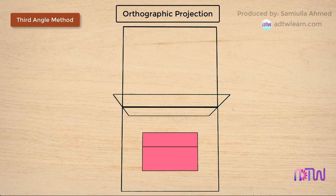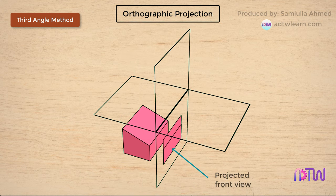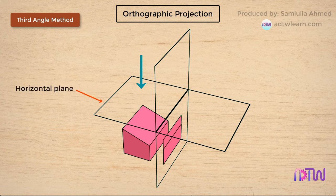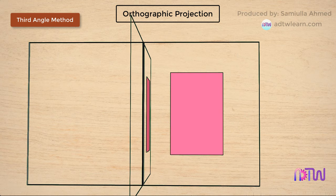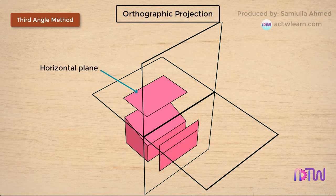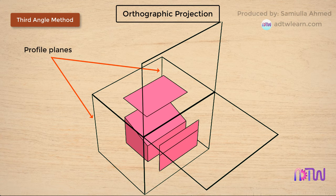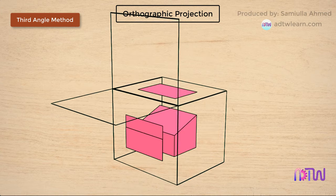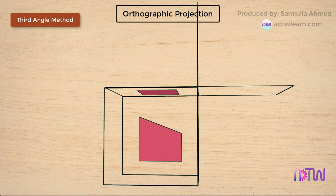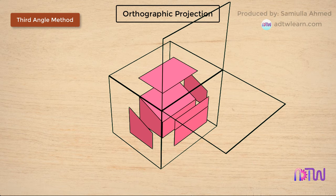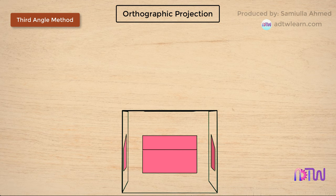Similarly, while viewing from the top, the horizontal plane comes between the point of view and the object, so the top view is projected on the horizontal plane. For the right-hand side and left-hand side views, we have two profile planes on either side of the object. When the viewer sees from the right side, the right side view is projected on the right profile plane of the third quadrant, and the left side view is projected on the left profile plane.